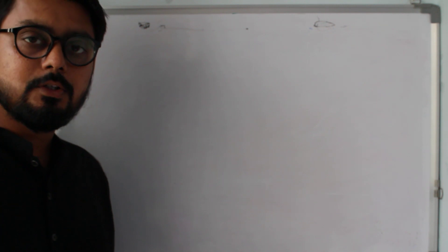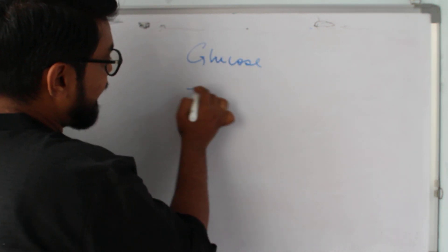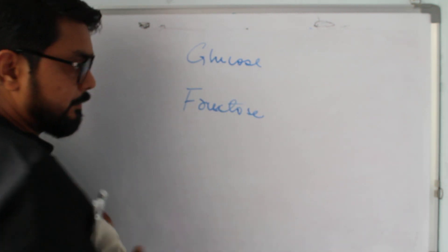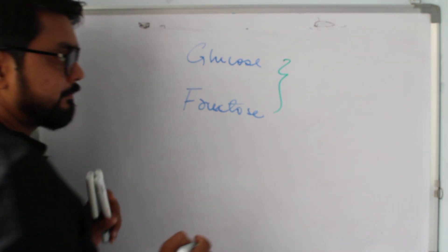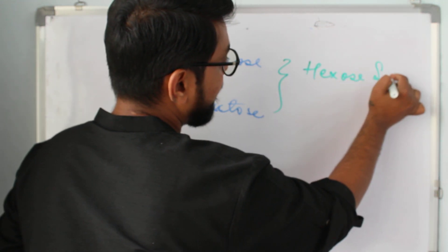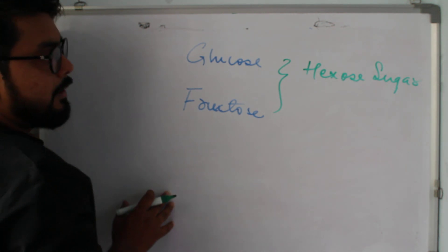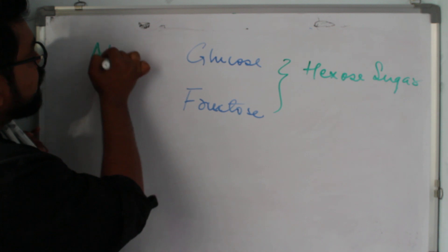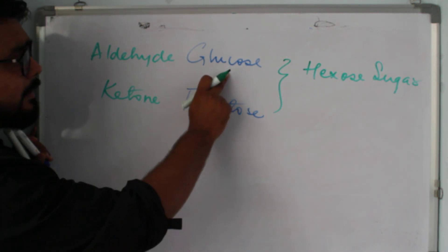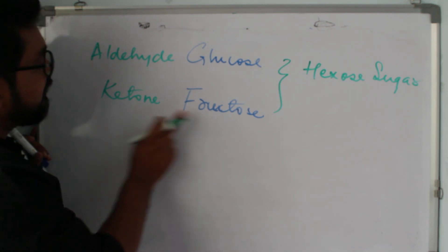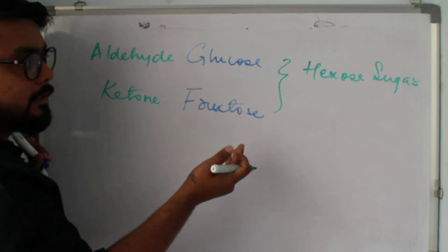Today we're talking about the structure of maltose. In earlier lectures we discussed glucose and fructose. Both of these structures are hexo sugars because they have six carbons. Glucose is an aldehyde sugar — the aldehyde group is added to the first carbon — and fructose is a ketone sugar, with the ketone group on the second carbon. So altogether we term them as hexo sugars.